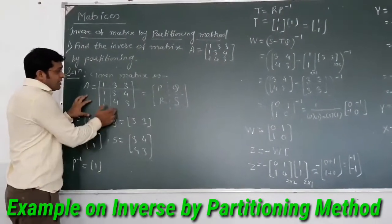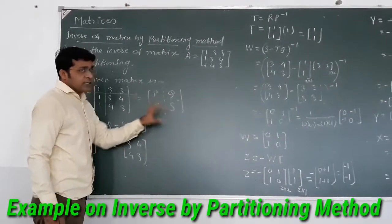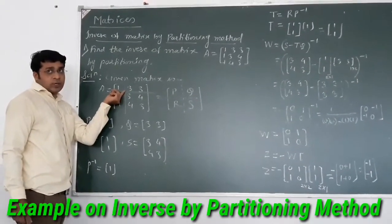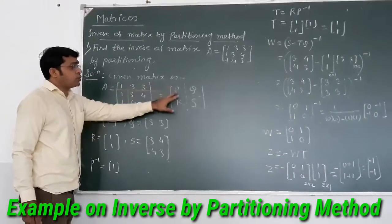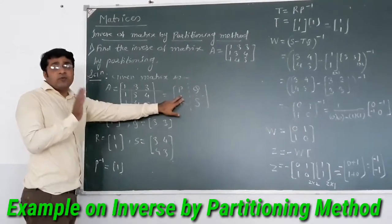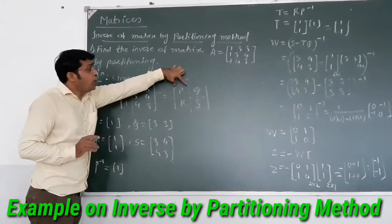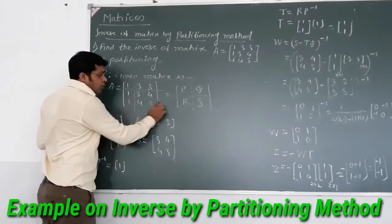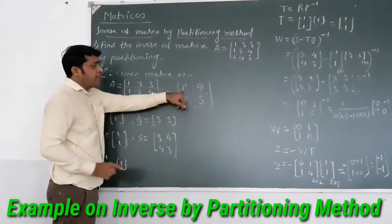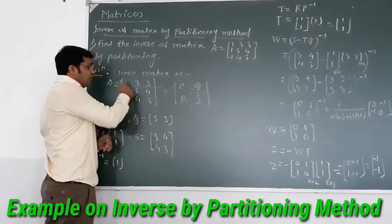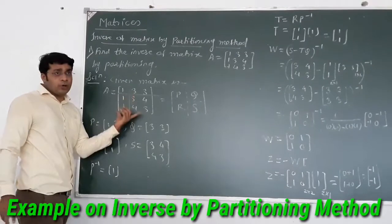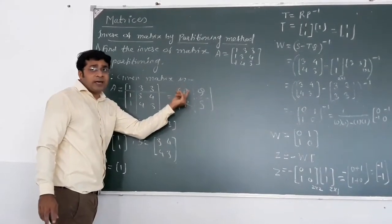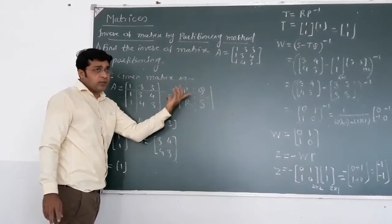Our job is to partition the given matrix into 4 parts: P, Q, R, and S. One thing to remember — whenever you partition, the P matrix will be a square matrix. Here I am taking P as a 1 by 1 square matrix. P must be non-singular, meaning the determinant should not be zero. For example, if we take P as the 2 by 2 portion with values 1, 3, 3, 4, the determinant comes out to be 0, so that partition is completely wrong.